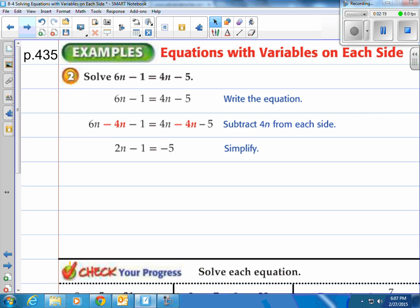We just brought down the negative 1 and the minus 5 there, and now we would want to get the number parts, that minus 1, to go to the other side. So we add 1, we do the inverse operation, we have negative 5 plus 1.